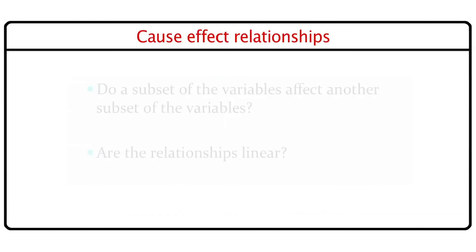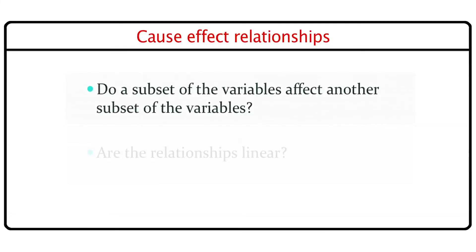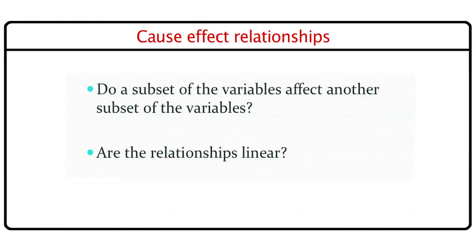The third aspect of multivariate studies is cause-effect relationships. As in regression or ANOVA studies, we look at whether a subset of the variables affects another subset, whether there is a relationship between them, and if so, whether this relationship is in linear form. Very often, many of the covariates or explanatory variables are non-continuous — they may be discrete or categorical — and hence we might take recourse to analysis of variance or analysis of covariance. But in each of these cases, the number of response variables is more than one. So we extend the ANOVA or ANCOVA models into a multivariate analysis of variance or multivariate analysis of covariance, referred to as MANOVA or MANCOVA.